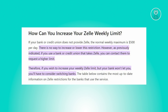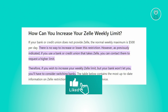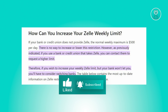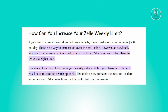So the first thing we want to do is identify if we can actually increase our Zelle limit. If your financial institution doesn't offer Zelle, the standard daily limit for transactions stands at $500. This limit is non-negotiable and cannot be adjusted. However, if your bank or credit union supports Zelle, you can get in touch with them to request a higher transaction limit.